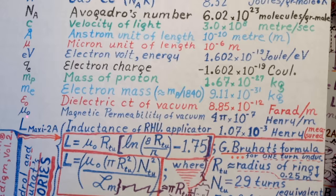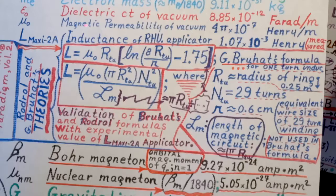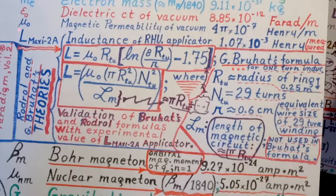Epsilon zero, we talked about it, you see Farad per meter, but we saw that it could be expressed in many basic units. Mu zero, magnetic permittivity of vacuum, we saw this value.